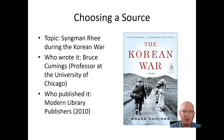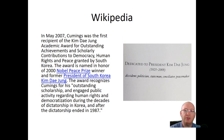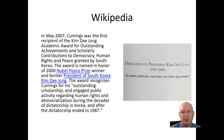Who published it? Modern Library Publishers. That's a little curious — not a university press. They're a reputable press, but why didn't a university press publish it? Looking inside the book, it's dedicated to President Kim Dae-jung and describes him as 'dissident politician, statesman, and peacemaker.' That tells me something about his politics, because Kim Dae-jung was on the political left — famous as a pro-democracy activist against the South Korean dictatorship.